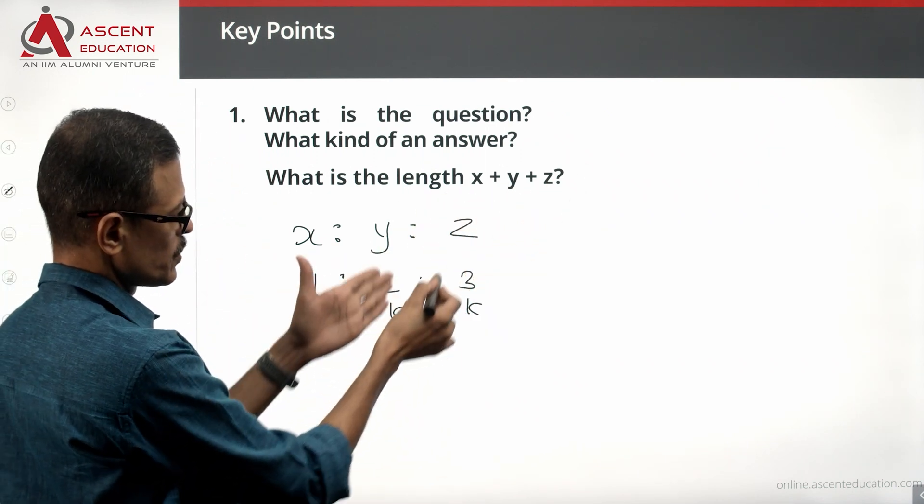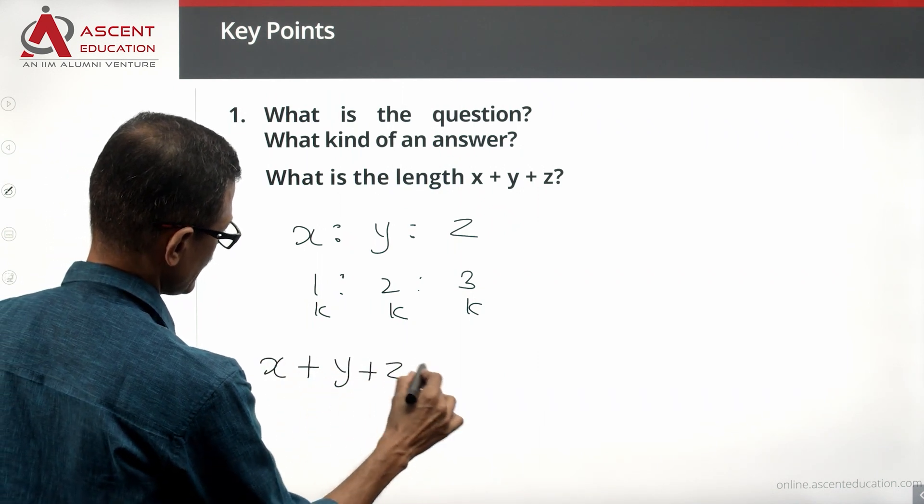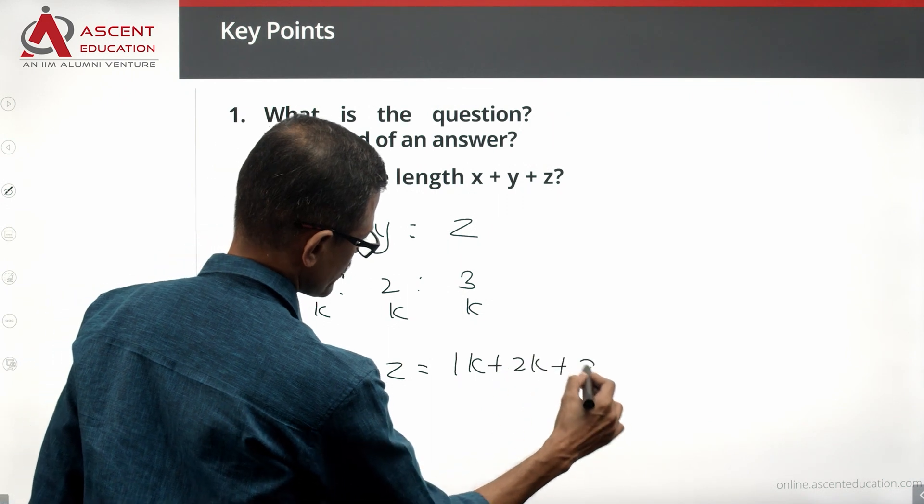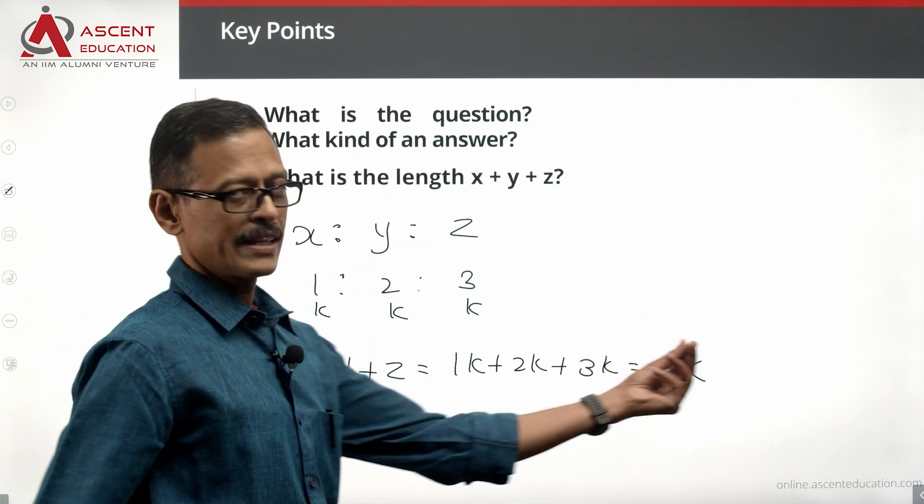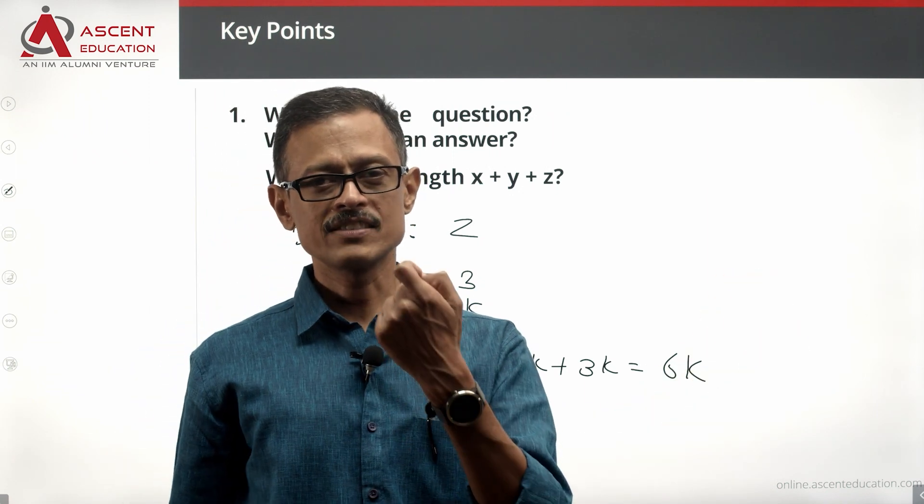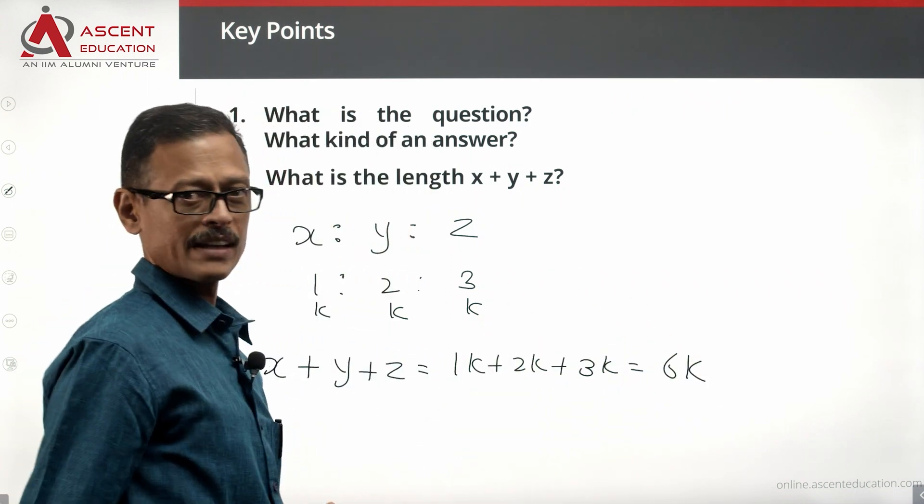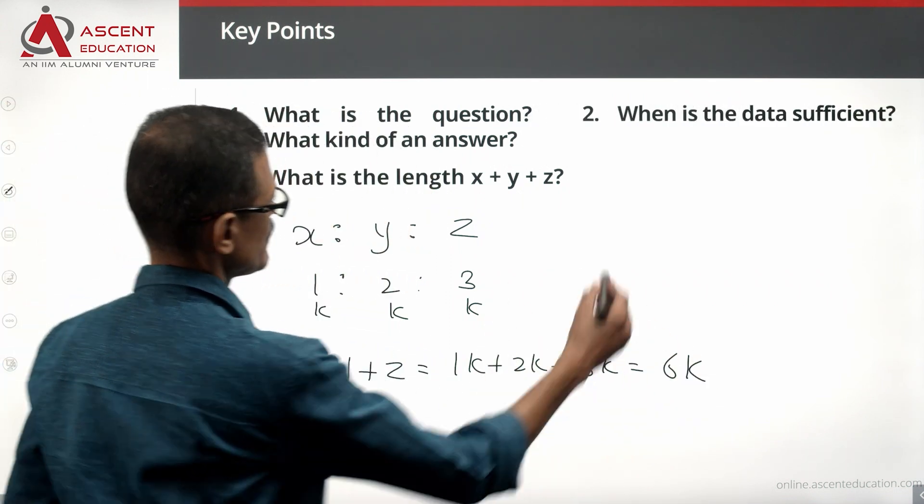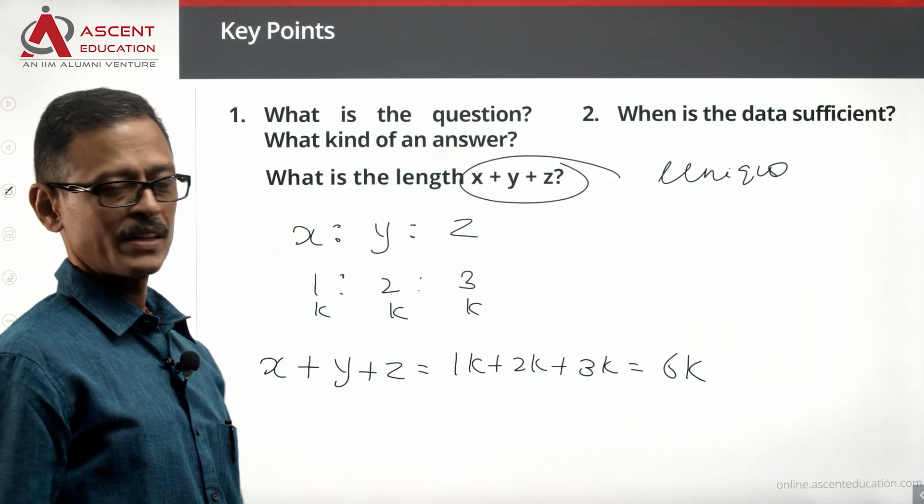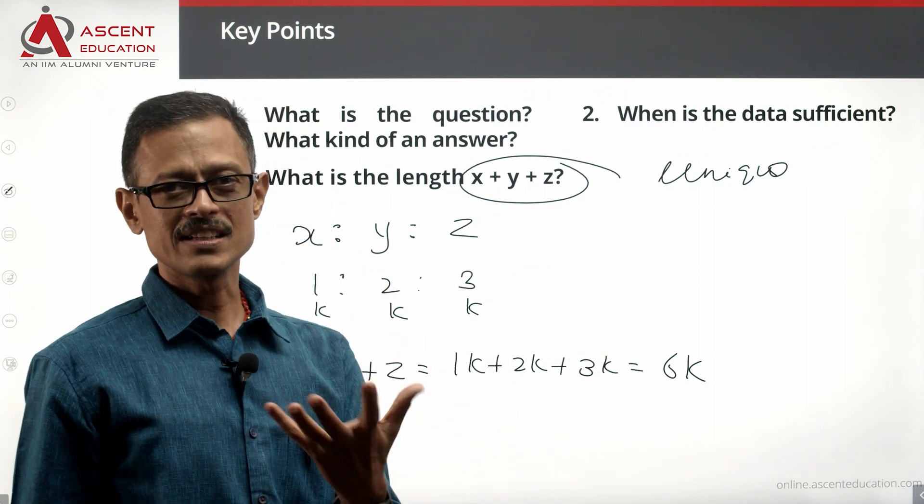If X is equal to 1K, Y is equal to 2K and Z is equal to 3K, then X plus Y plus Z is equal to 1K plus 2K plus 3K which is equal to 6K. So we will be able to find a unique value for the answer to this question if we know 6K. Our objective right now is K unique value, right? The data is sufficient when we have a unique value for K.